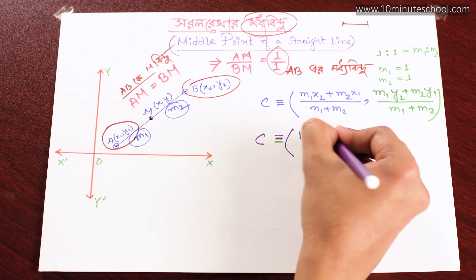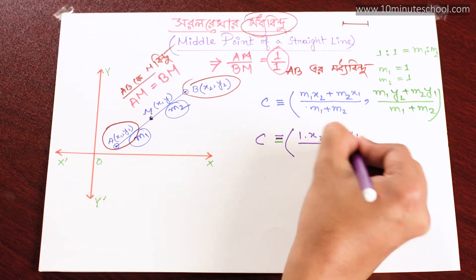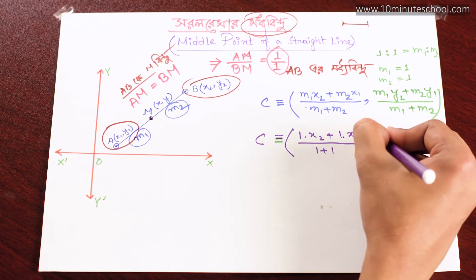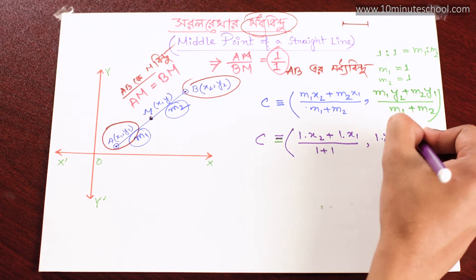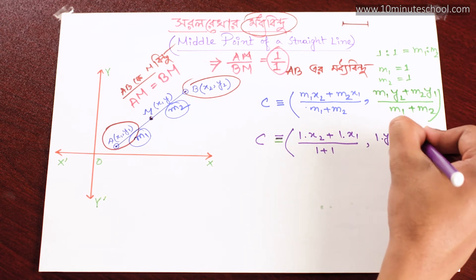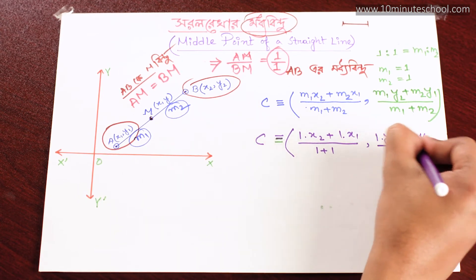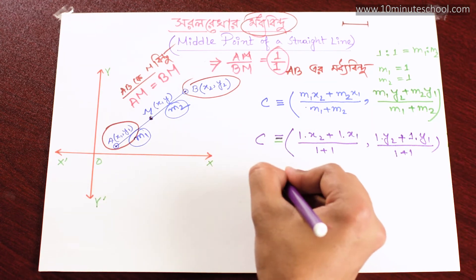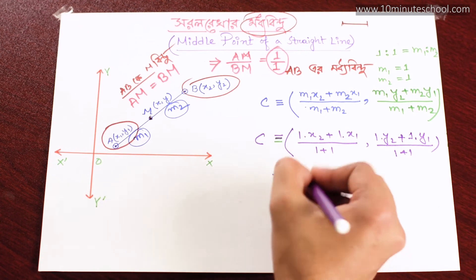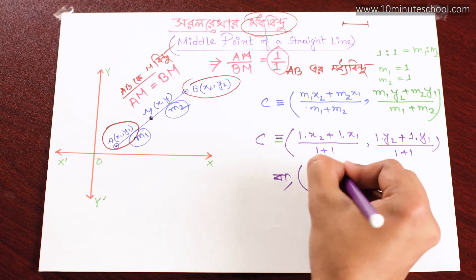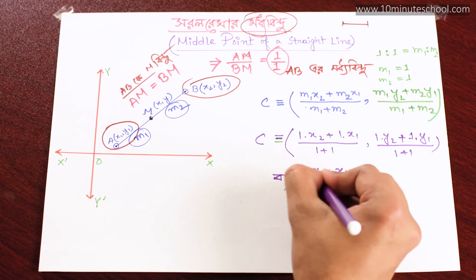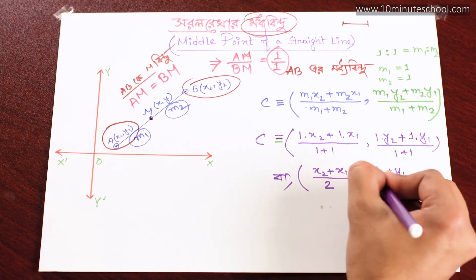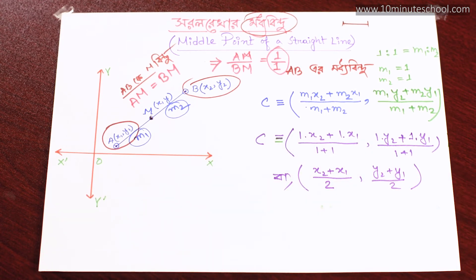m1 into x2 plus m2 into x1 divided by m1 plus m2, comma, m1 into y2 plus m2 into y1 divided by m1 plus m2. When m1 equals m2 equals 1, this simplifies to: x2 plus x1 divided by 2, comma, y2 plus y1 divided by 2.